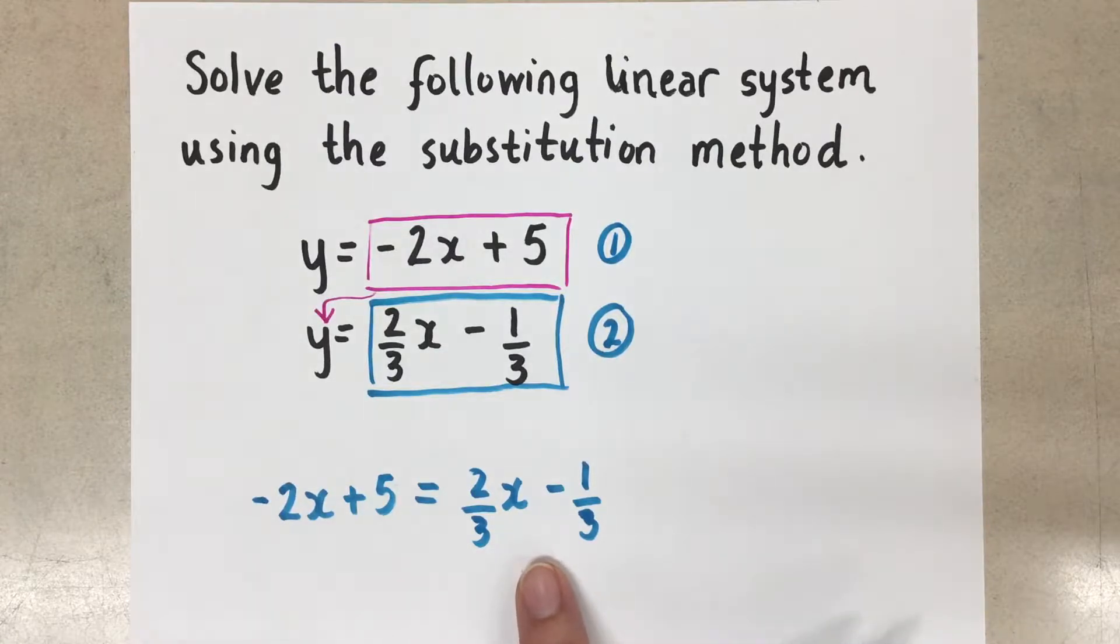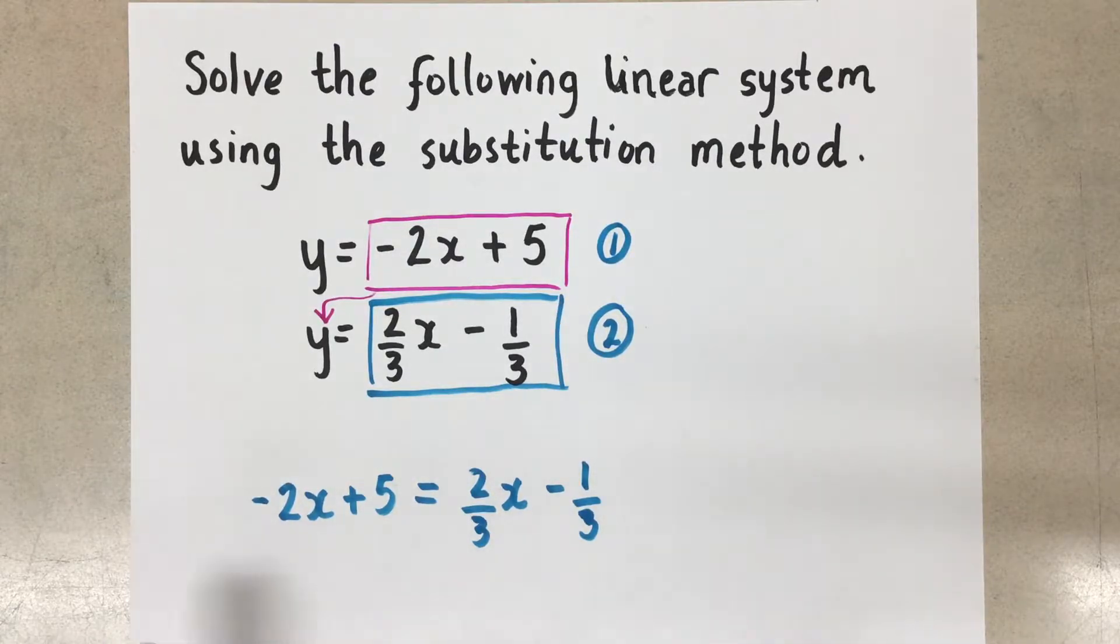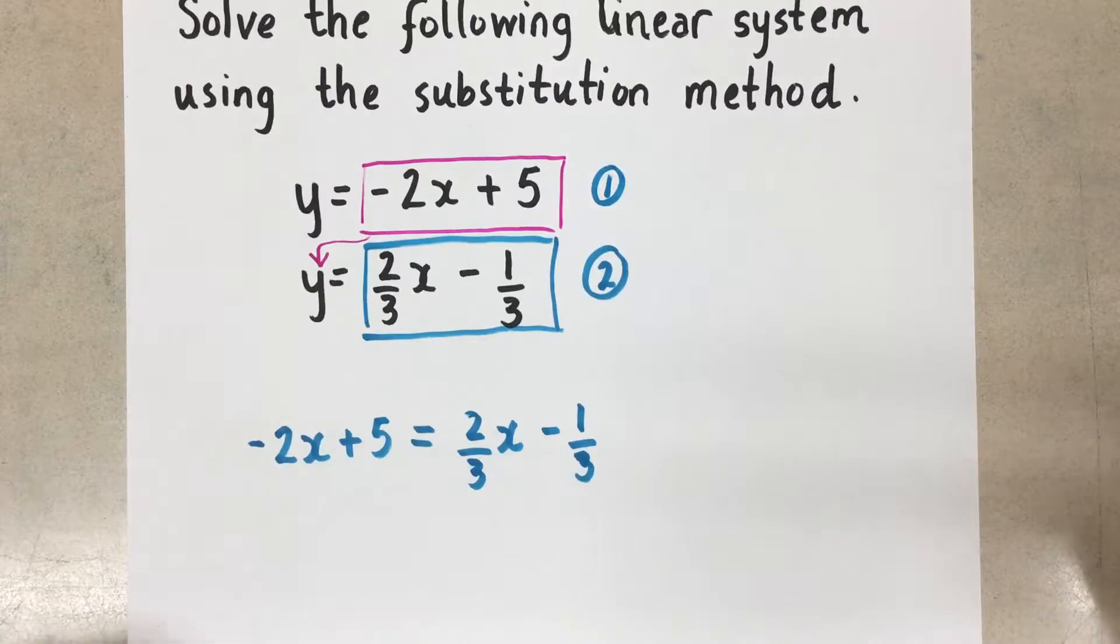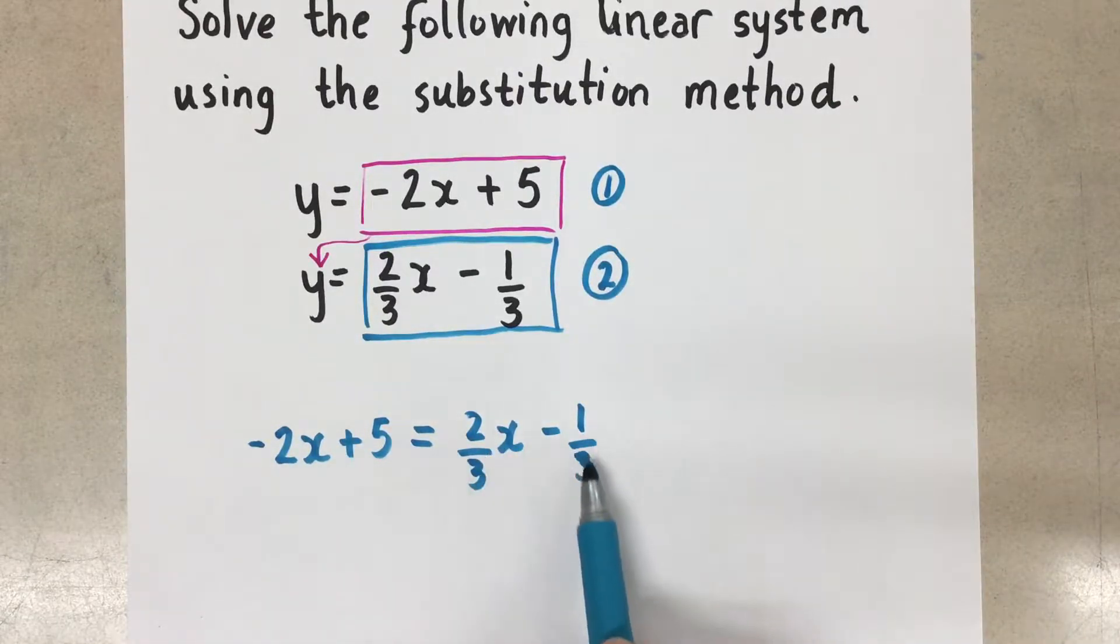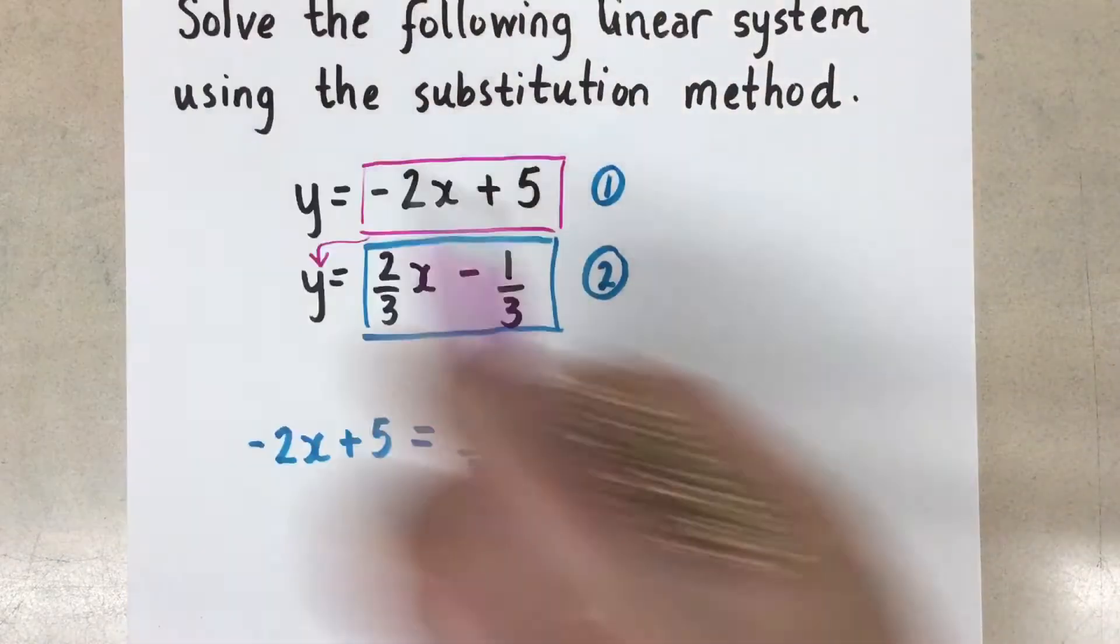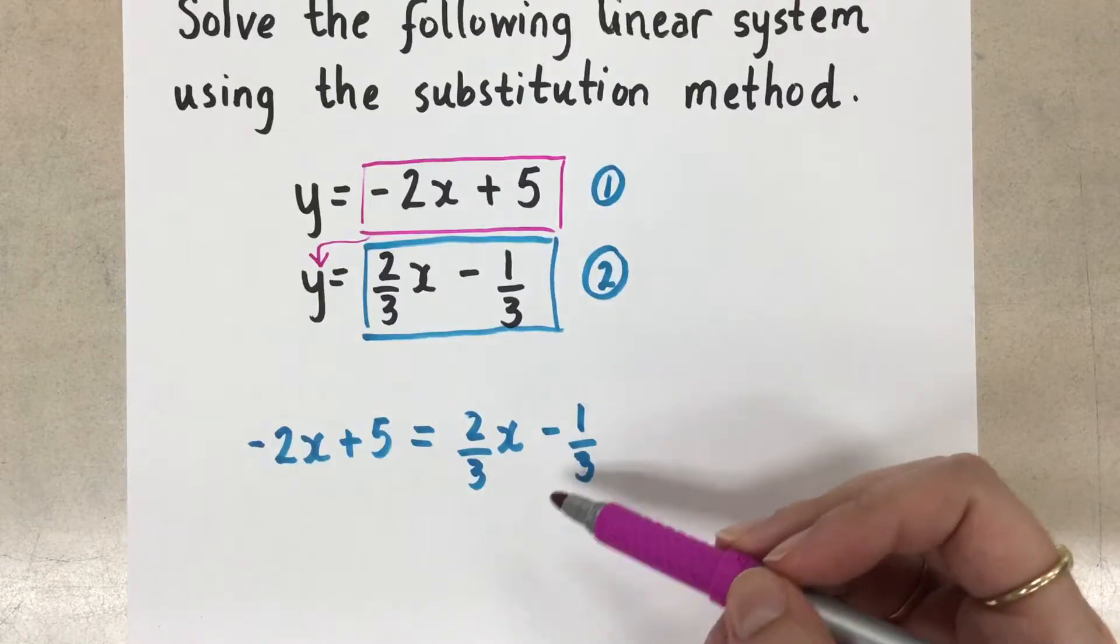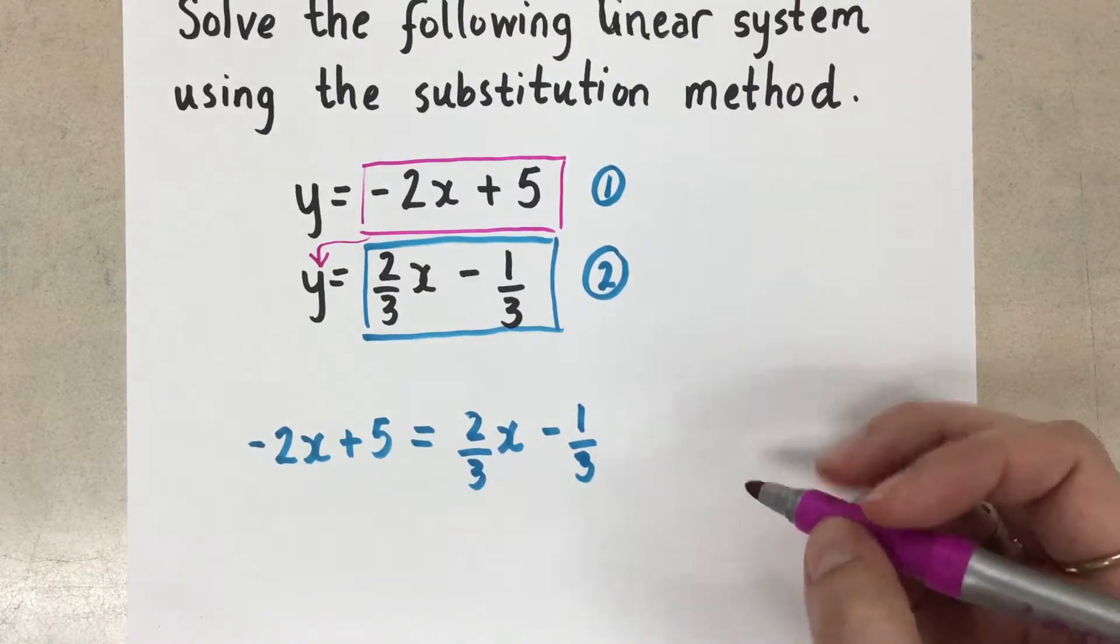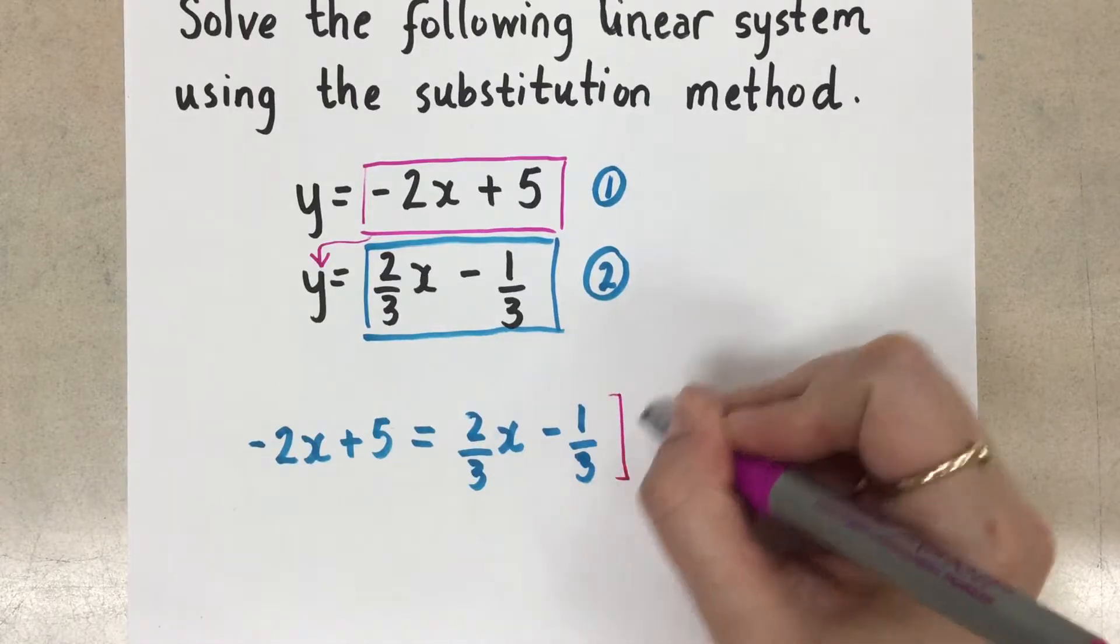So we can move things around now to combine like terms and to solve for the x variable only. So the first thing I want to do is get rid of this fraction. We have that over 3 on this side here. It will be easier for us to solve if we cancel out or eliminate that fraction by multiplying the whole expression by 3.